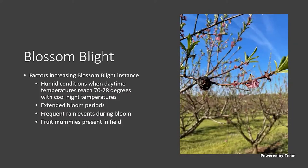You can see the picture there — that is a mummy from the previous year. We're already in the shuck split stage of development from this year and there are still mummies on the tree from last year. Those should have been knocked off. I understand that if you've got 100 acres of peach trees it's hard to knock every one off, but if at all possible get them out of the field or at least knock them off the tree.